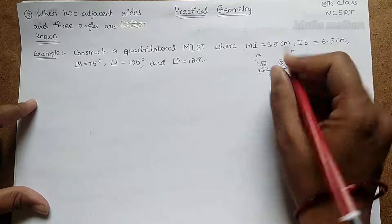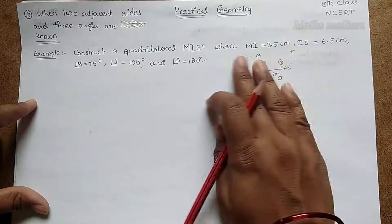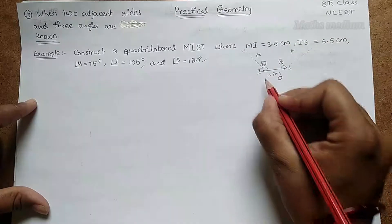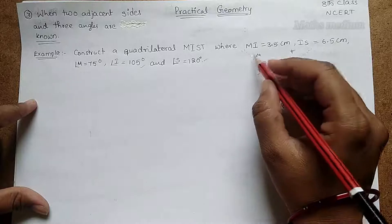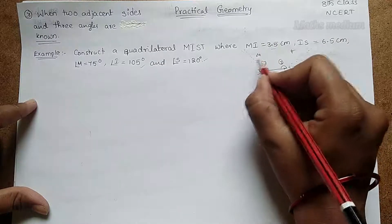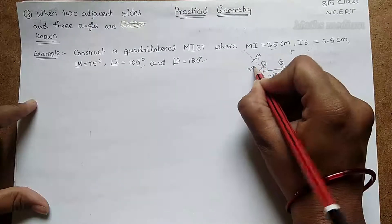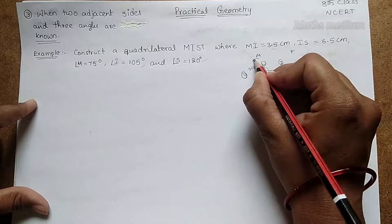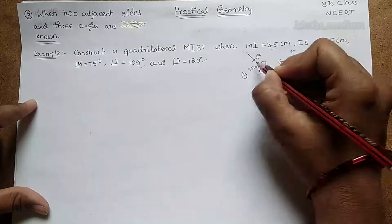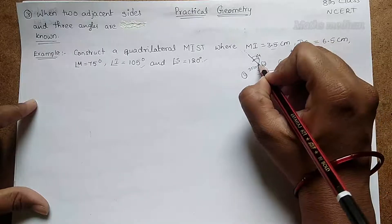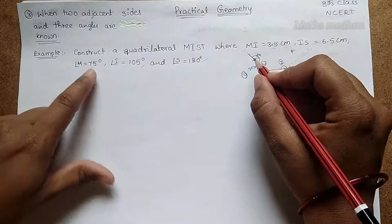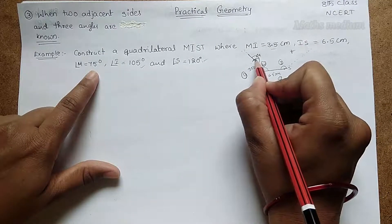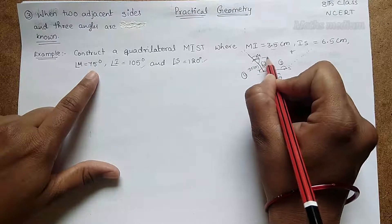Next, coming to Step 4, we have to construct MI equal to 3.5 centimeters. We have one line, so take 3.5 centimeters with a compass and make an arc at 3.5 centimeters on that line. We get point M. Then put the protractor at M and mark 75 degrees.